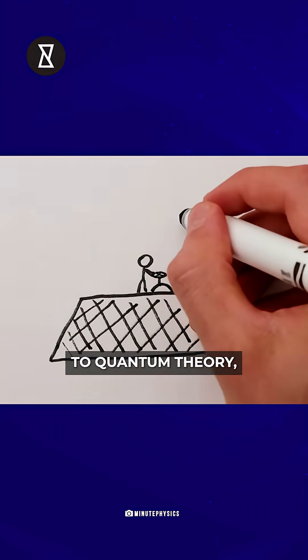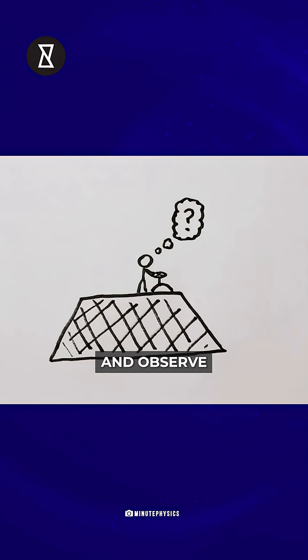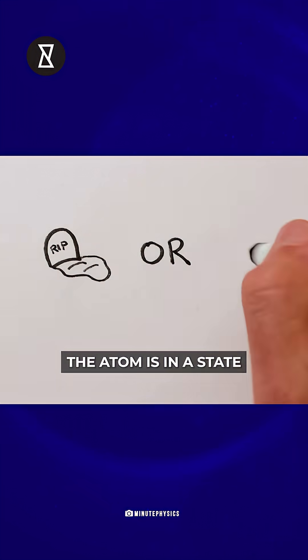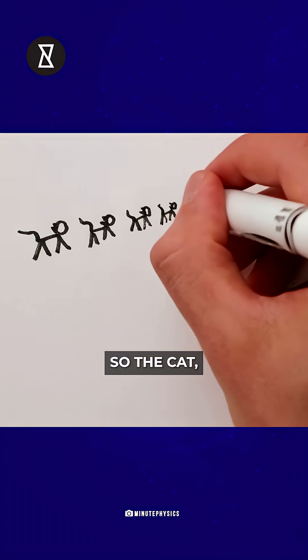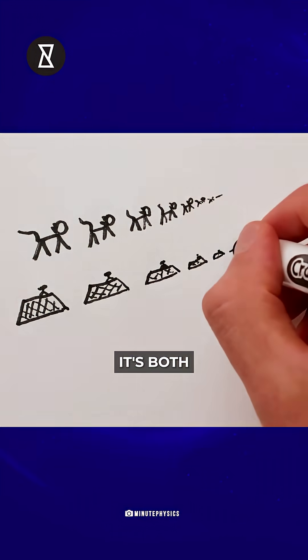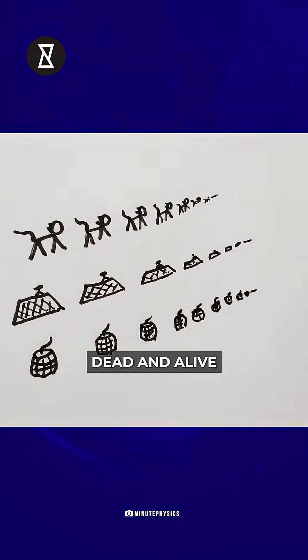according to quantum theory, until we open the box and observe what happened, the atom is in a state of both decayed and not decayed. So the cat? It's both dead and alive at the same time.